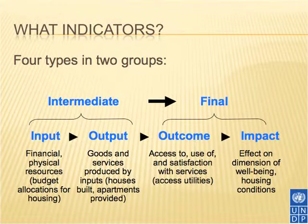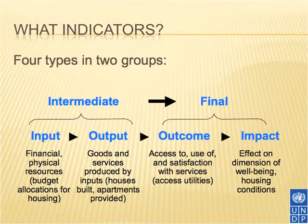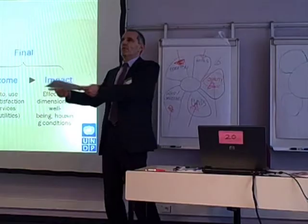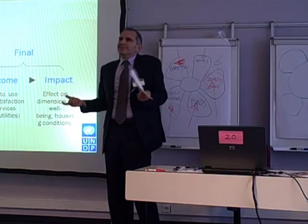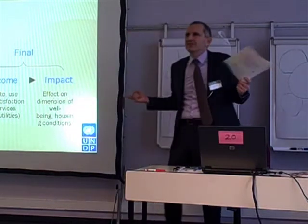When analyzing National Action Plans on Roma Inclusion a few years ago, the notorious mistake being committed was confusing inputs and outputs, and even worse, inputs and outcomes. People report that they will achieve Roma inclusion in an area and the indicator of achievement will be the number of training sessions conducted — which is simply not correct.